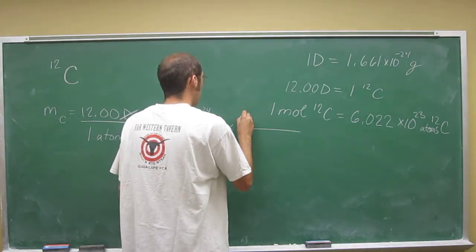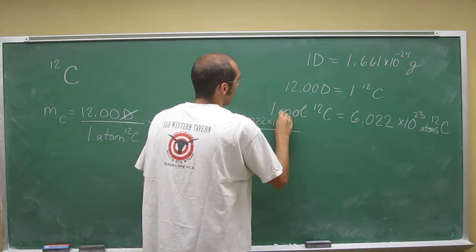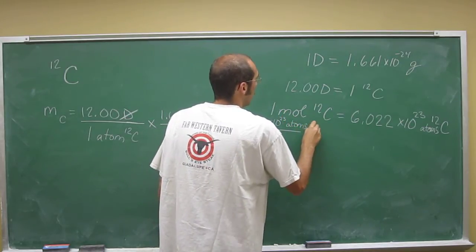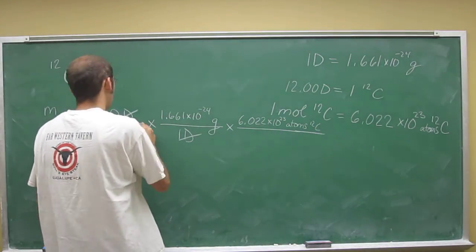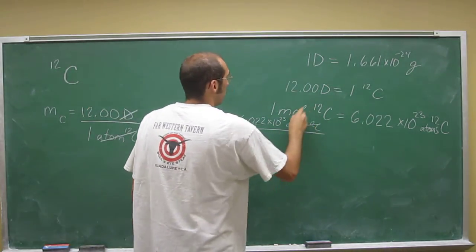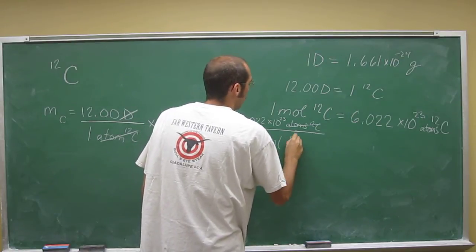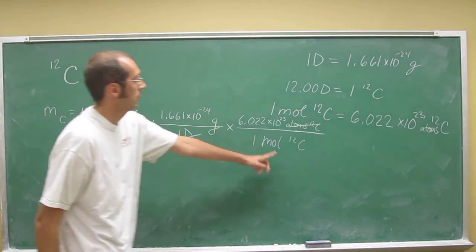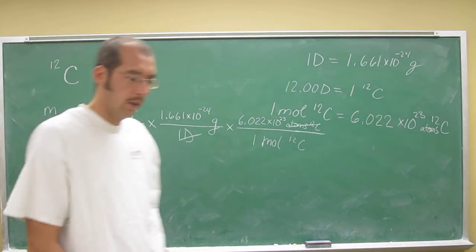In order to do that, we've got to put 6.022 times 10 to the 23rd atoms of carbon-12. That's going to cancel that out. So we've got to put the mole on the bottom: 1 mole of carbon-12. That should give us grams per mole of carbon-12, and that's the units we wanted.